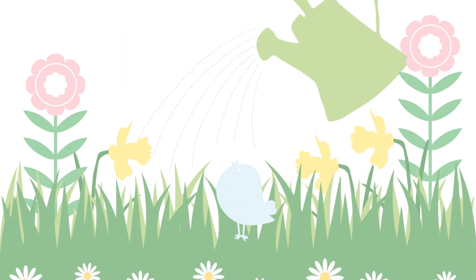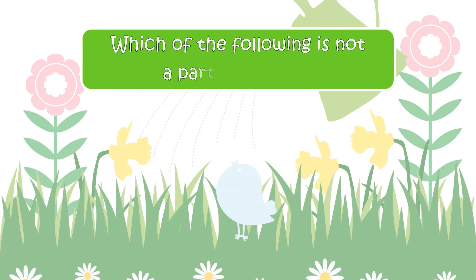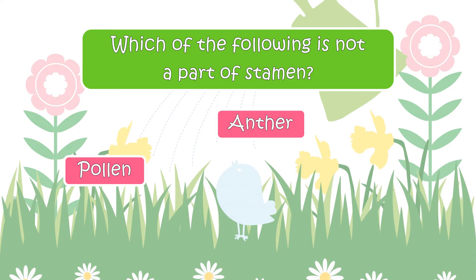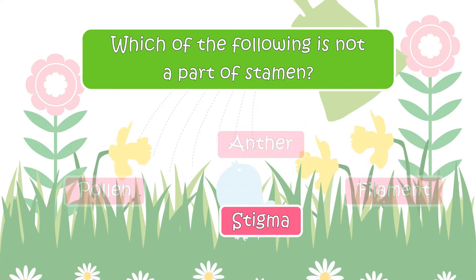The next question is: Which of the following is not a part of Stamen? Your options are Pollen, Anther, Filament, or Stigma. The answer is Stigma.